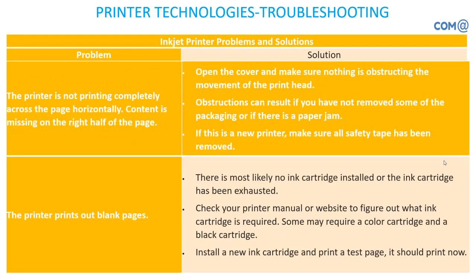If the printer is not printing completely across the page — content is missing on the right half — this is a mechanical problem. Open the printer and check whether the print head is moving end to end. In an inkjet printer, the print head moves from left to right to print characters and graphics. If the first portion of the page is missing while the rest prints, something is obstructing the roller or the print head's full range of movement. Open the cover, ensure there are no obstacles, and verify the print head is moving completely from left to right.